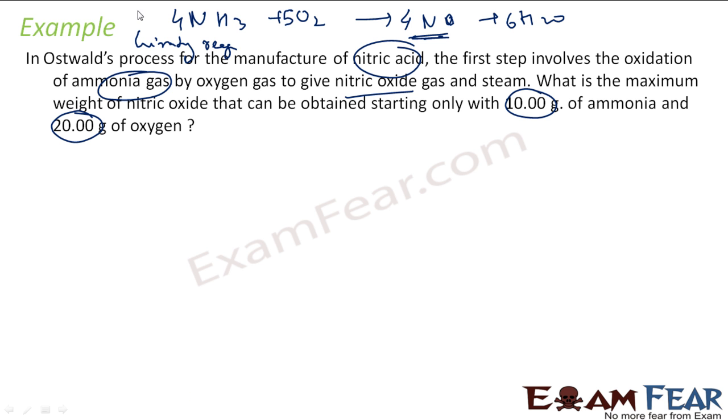So NH3, if you find the atomic mass, the atomic mass of NH3 is 17. For oxygen, it is 32. For NO, 16 plus 14 is 30. For water, it is 18 gram. This is the atomic mass. That means this equation I can write as 68 grams of NH3 plus 160 grams of oxygen will give you 120 grams of NO plus this water.